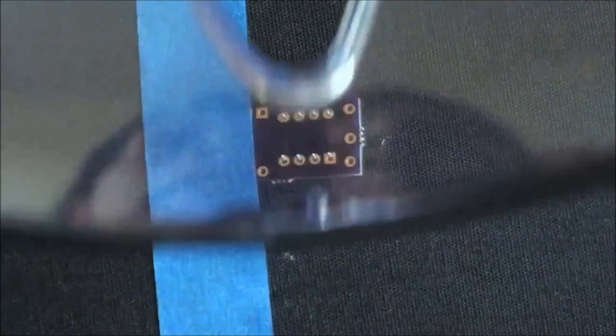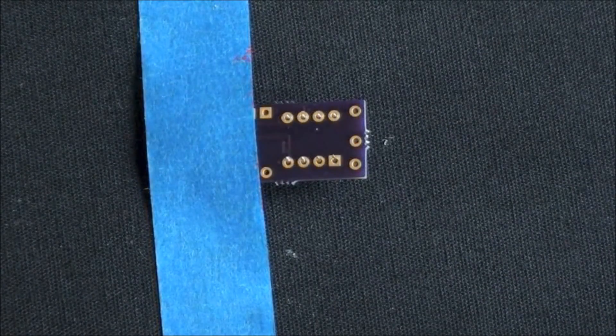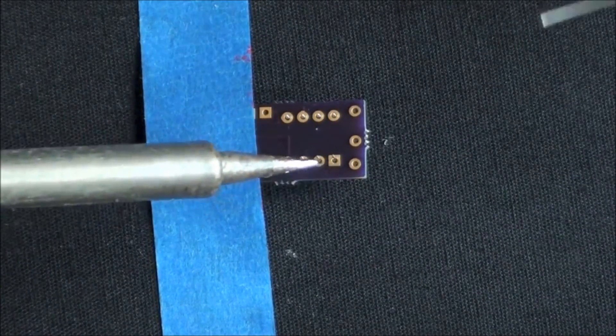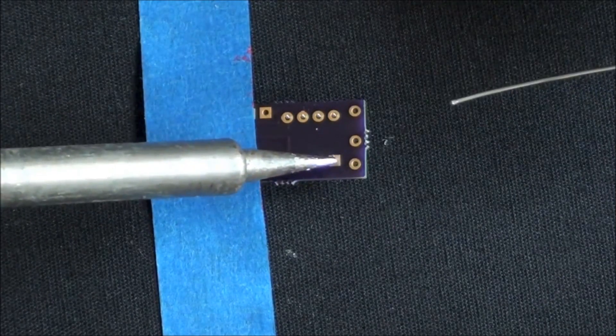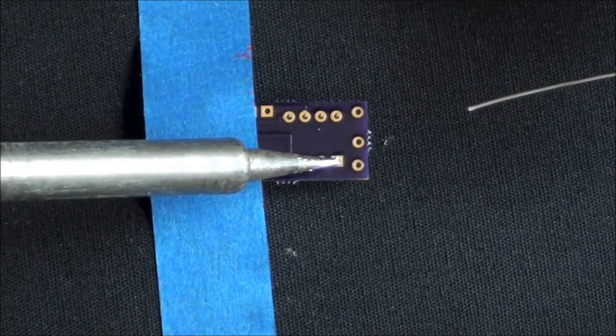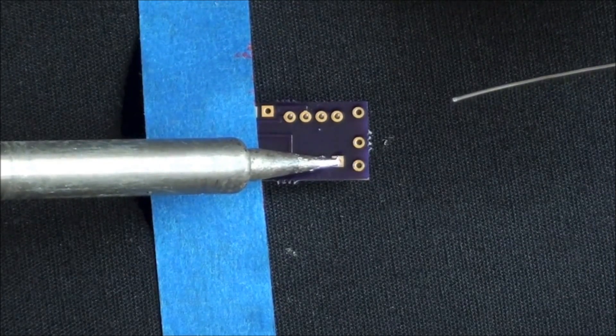We will be wearing safety glasses to protect our eyes while soldering. Next, we are going to use the soldering gun or glue, depending on what you chose to use, to mount the microcontroller onto the PCB board.